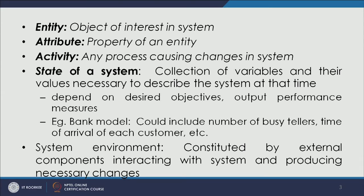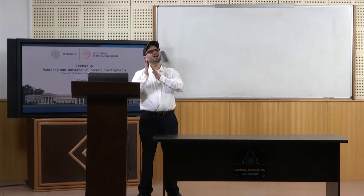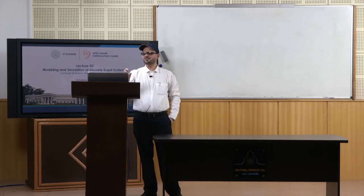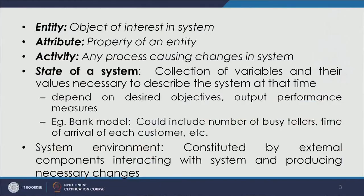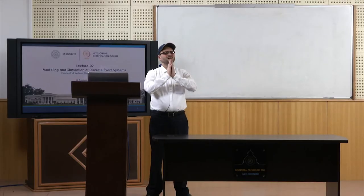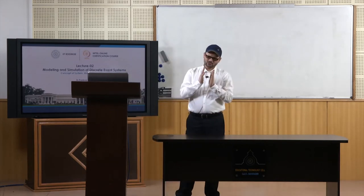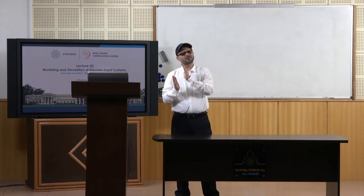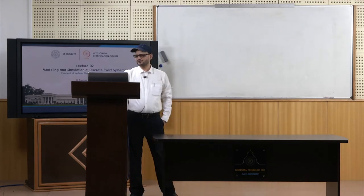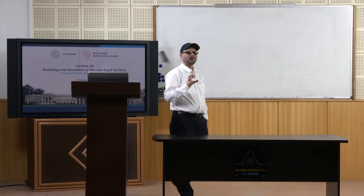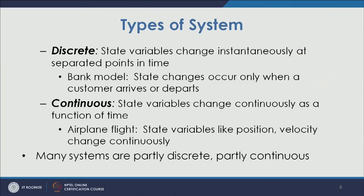The state depends on desired objectives and output performance measures. In the bank model, this can include the number of busy tellers or the time of arrival of each customer. System environment is constituted by external components interacting with the system and producing necessary changes — when studying a system, we must see how it interacts with the outside world around the boundary.